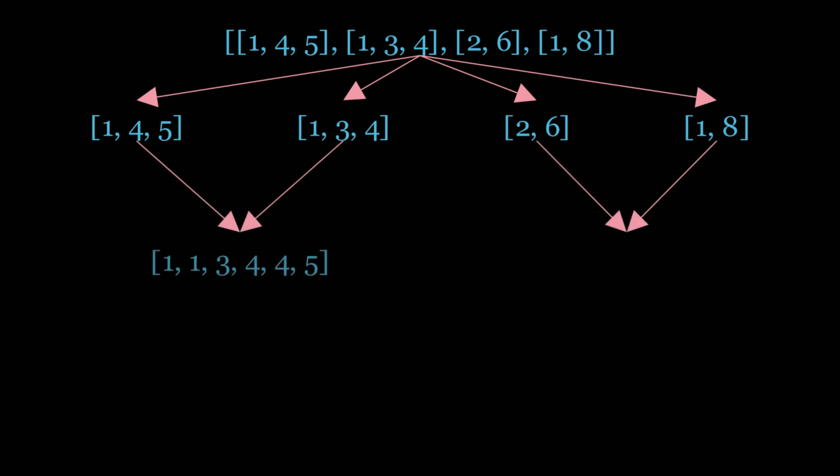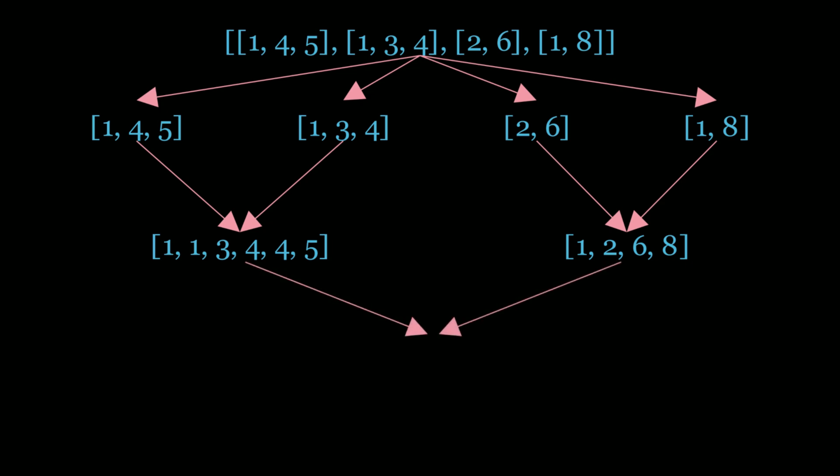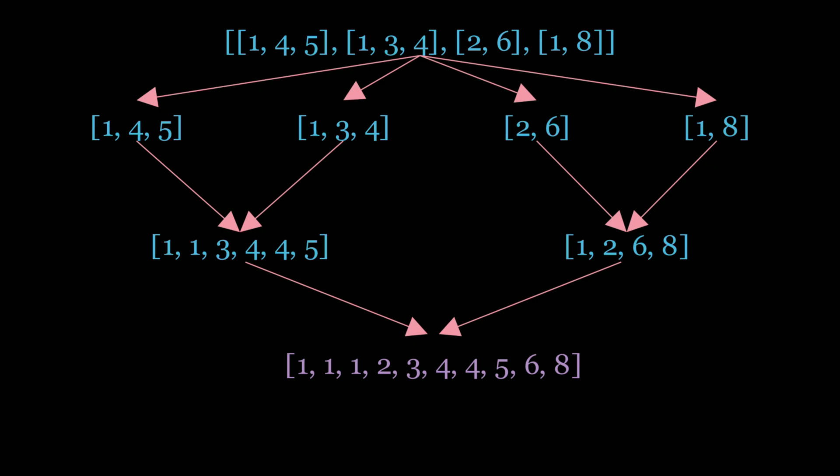So let's merge these two lists on the left and then on the right as well, and now we have two lists left over. Now we need to merge them again and this is the final result. There's another LeetCode question number 21 where you have to merge two sorted linked lists, and we're actually going to be reusing that solution here. This is the high level idea: we're going to be merging two linked lists at a time until we're done, in a merge sort fashion.